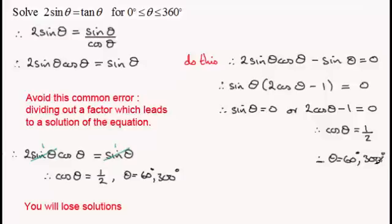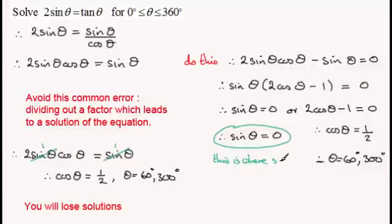Where did the other solutions come from? Well they came from sin(θ) equaling zero. And these are the solutions that are missed. So if sin(θ) equals zero, let's just circle this and put a note that this is where solutions are lost. Solving sin(θ) equals zero gives us the solutions θ equals 0 degrees, 180 degrees, and 360 degrees.